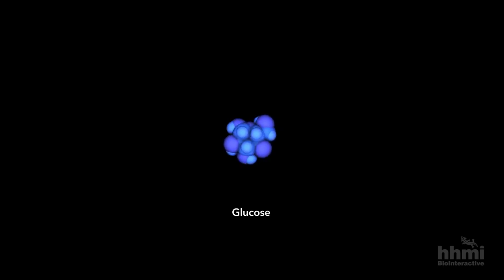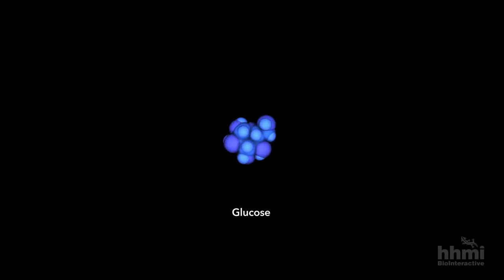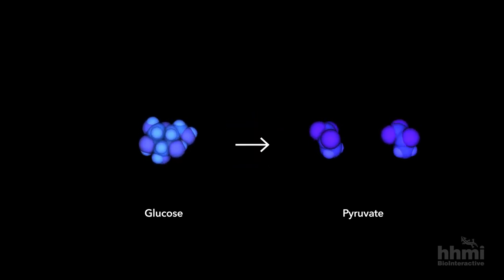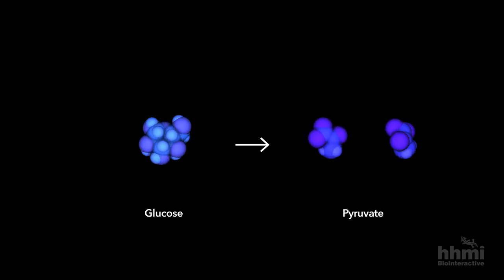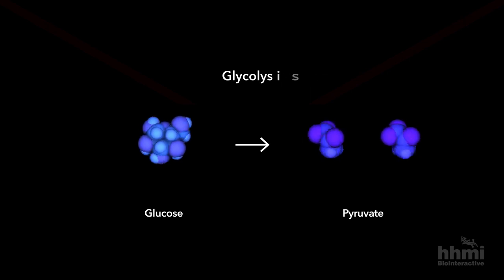The sweet, energetic glucose molecule is the energy source providing power for your living cells. Glucose, from the food you eat, is slowly broken down into two pyruvate molecules, extracting energy in a sequence of enzyme reactions called glycolysis.